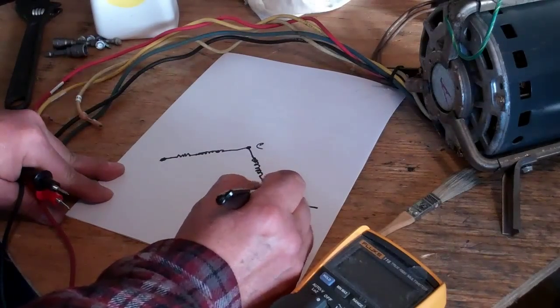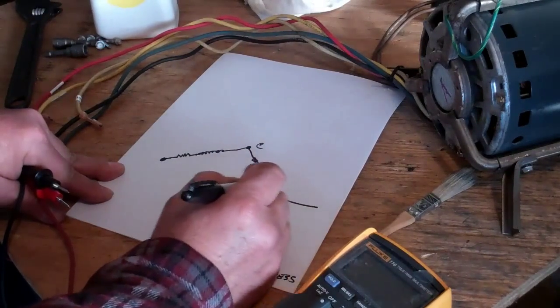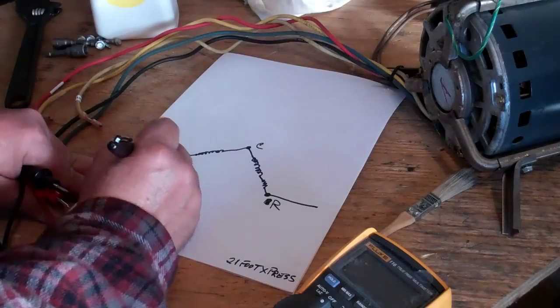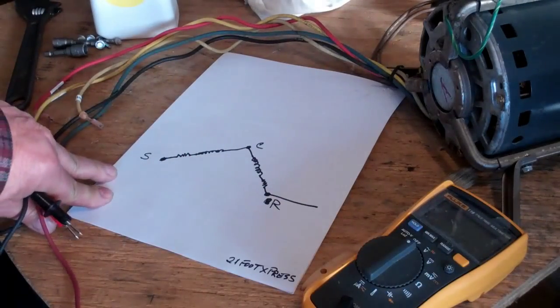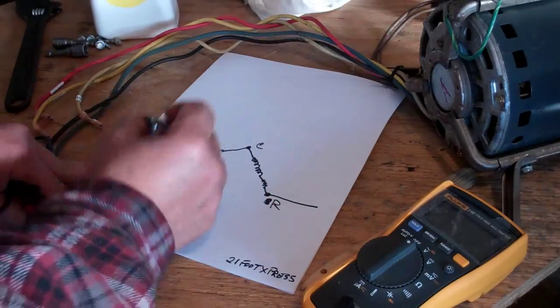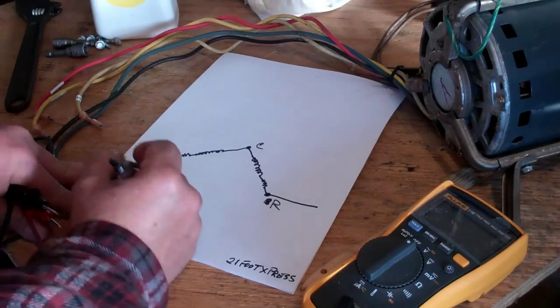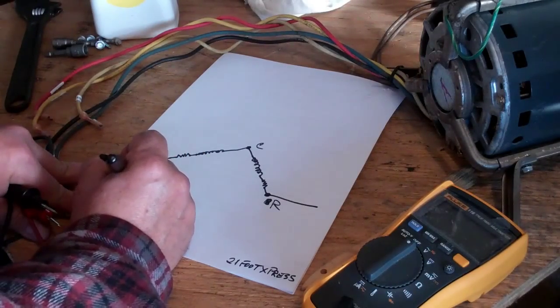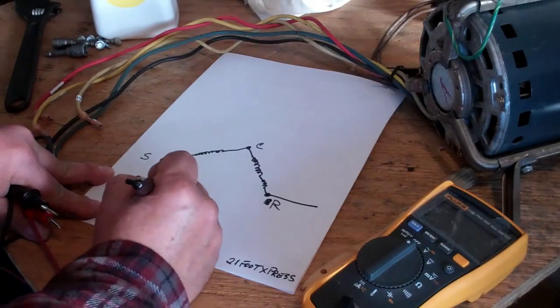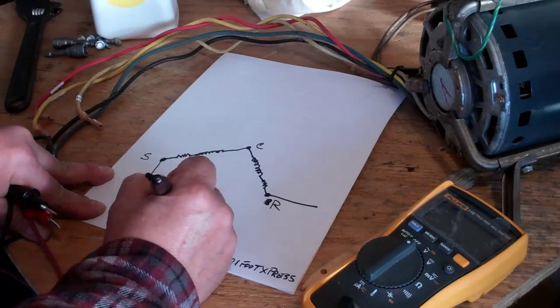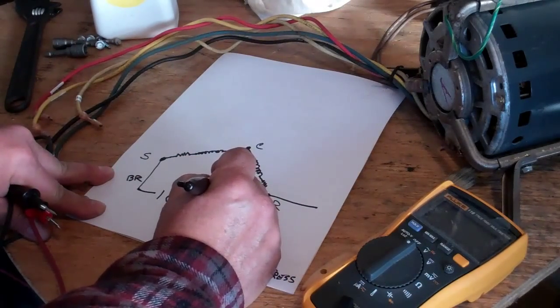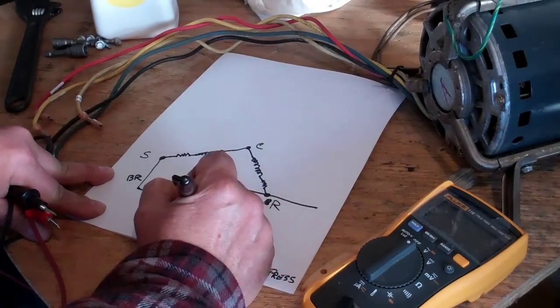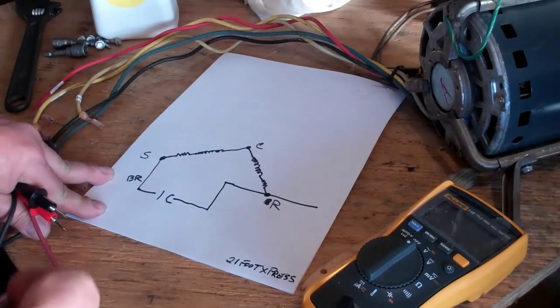I'm sorry, you know what, this is the R or run terminal, this is the start terminal. I hope you guys can see that. And then there's a brown wire coming out of here and it leads to a start capacitor which is in line.